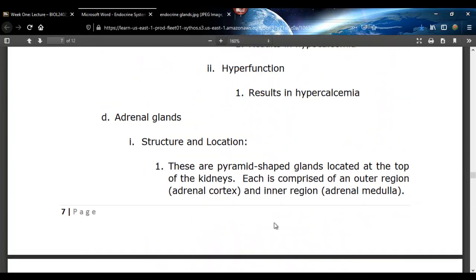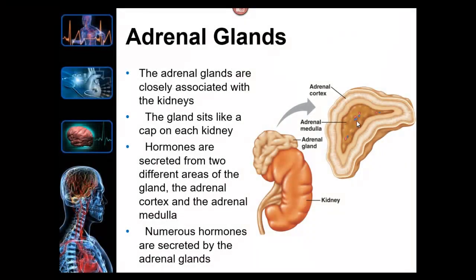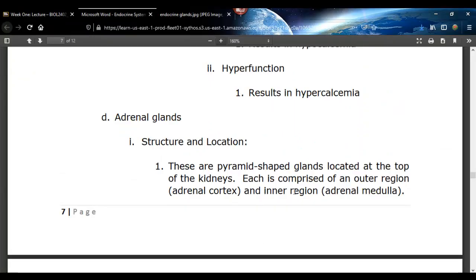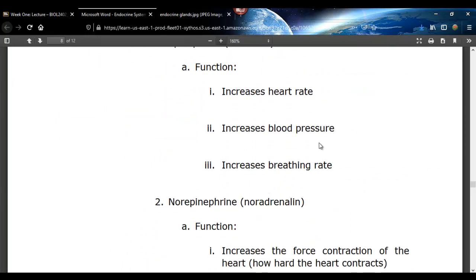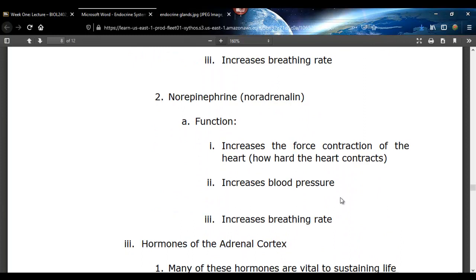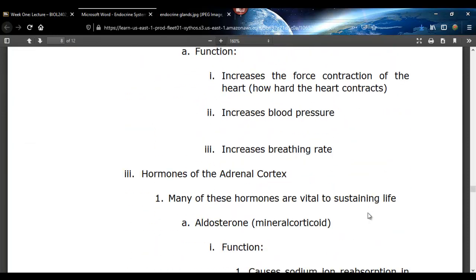The adrenal medulla is that little area there. In lab I mentioned how you can tell you're in the medulla — it has white spaces, which are actually the veins in the middle part. Veins have very thin walls and look like white spaces on a slide. The adrenal medulla is directly connected to the sympathetic nervous system. When stimulated, it releases epinephrine and norepinephrine, which both increase heart rate, blood pressure, and breathing rate. Norepinephrine makes the heart contract with more force.